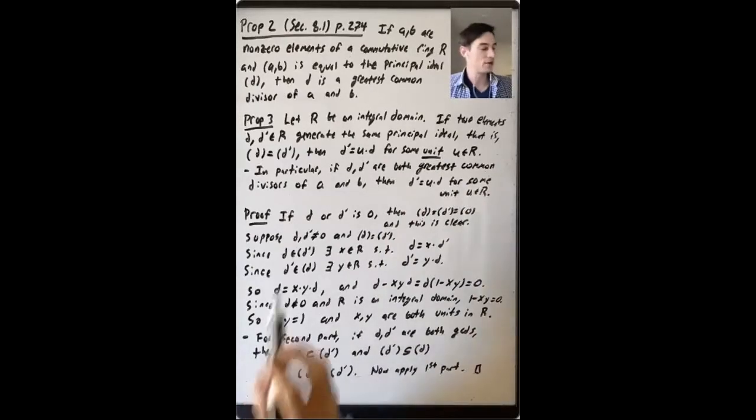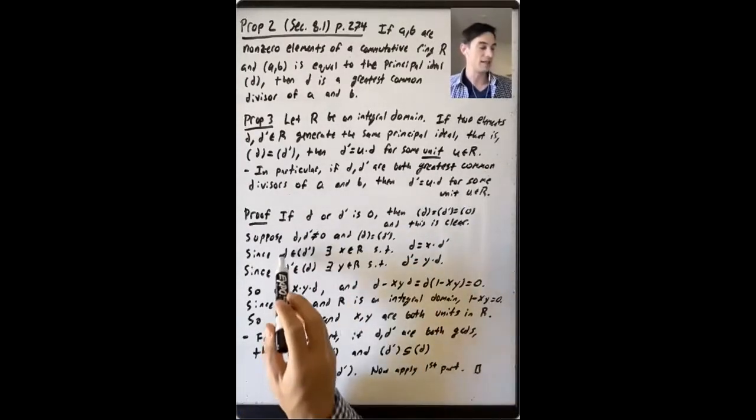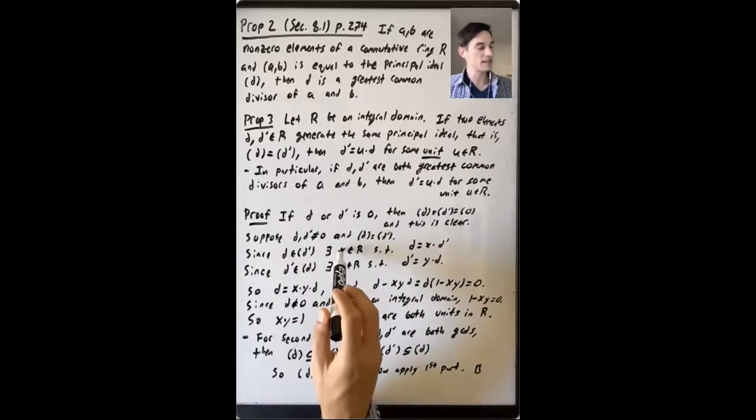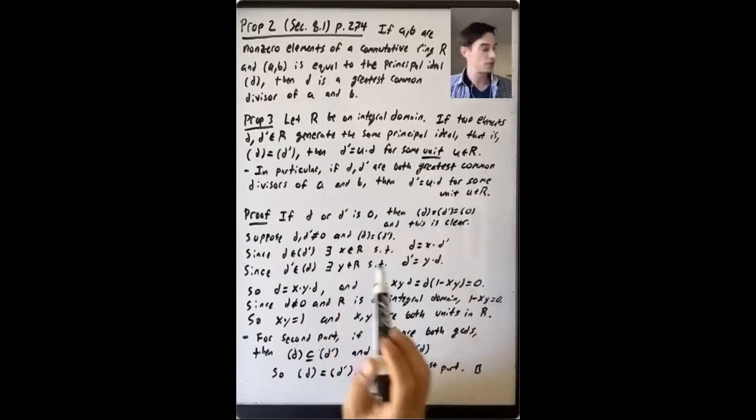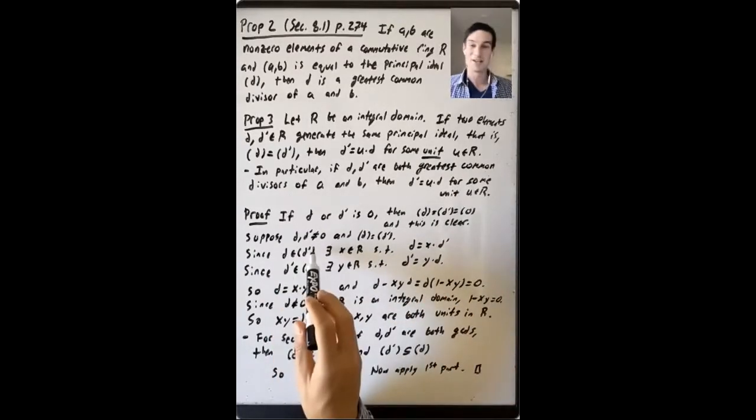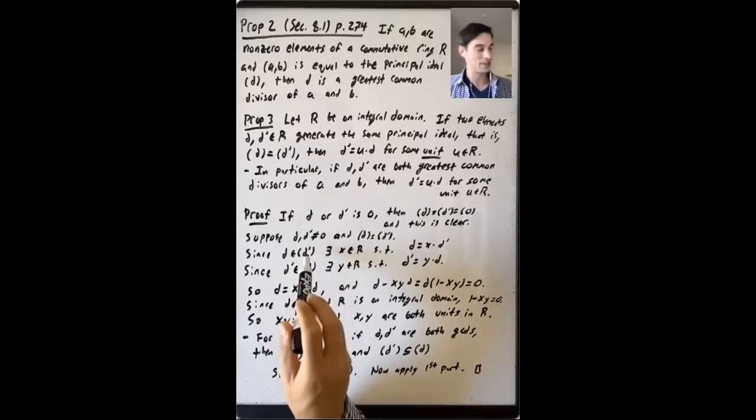So now let's suppose that D and D' are both non-zero elements of R, and they generate the same principal ideal. Well, now, since D is in the ideal generated by D', that means that there exists an X in R such that D is equal to X times D'. That's what it means to be in the principal ideal generated by an element in a commutative ring.